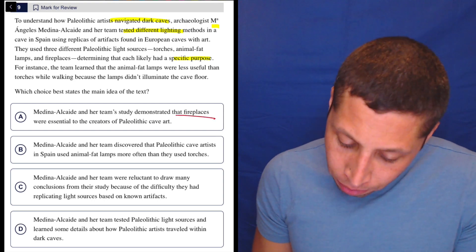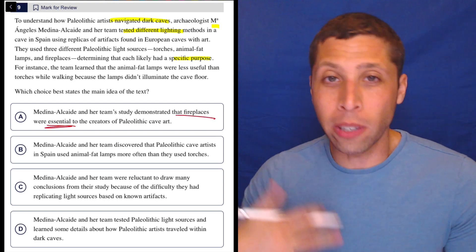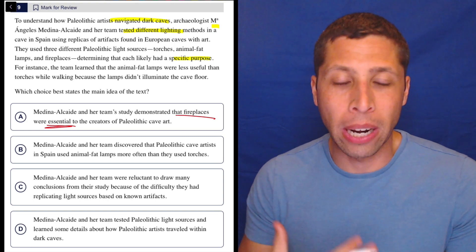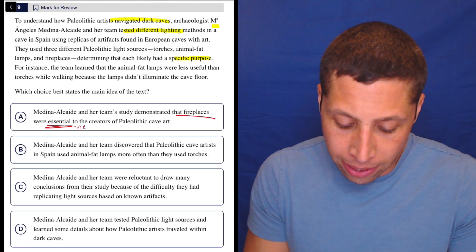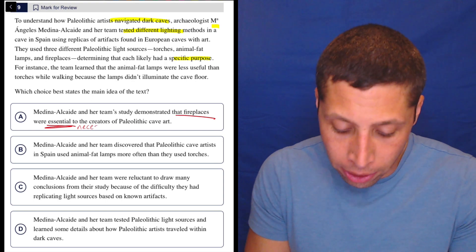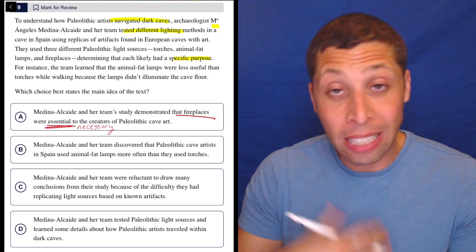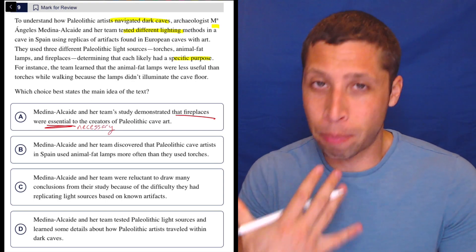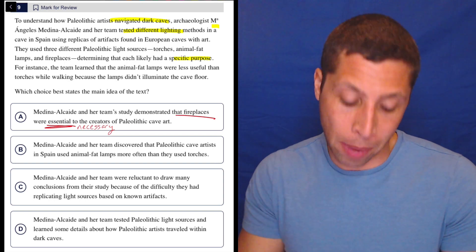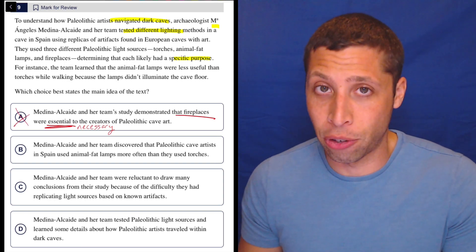So they're not ranking them, but also words like essential bother me no matter what. Whenever I see them in a choice, anything that talks about something being required or necessary makes me scared. It's not always wrong, but it's a big claim, and we need to back that up with the passage. We definitely don't have that information here.